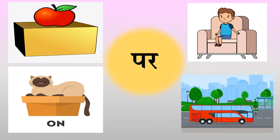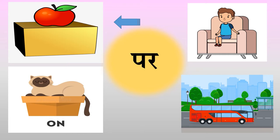यहाँ पर देखिए बच्चो, यहाँ पर क्या लिखा है? मेरे साथ बोलिए - पर। 'पर' का अर्थ है 'ऊपर'। चित्रों के रूप में उदाहरण दिए गए हैं। जैसे पहले चित्र को देखिए - सेब बक्से पर है। सेब कहाँ है? हाँ, बक्से पर।